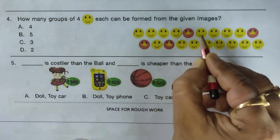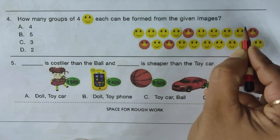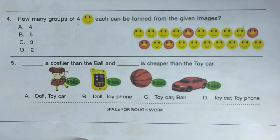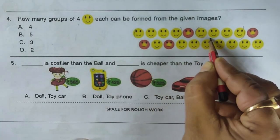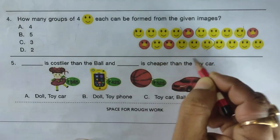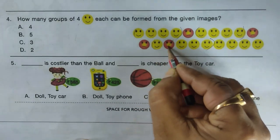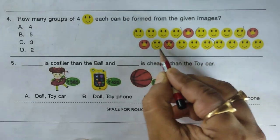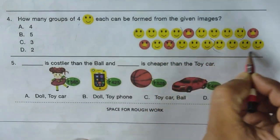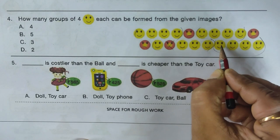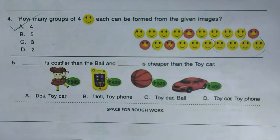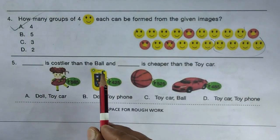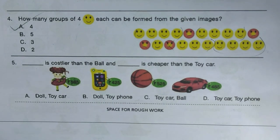Next question: how many groups of four smileys each can be formed? First group of four, second group of four, third group of four, and finally a fourth group of four — all total four groups. Hence the corresponding option is the right answer.